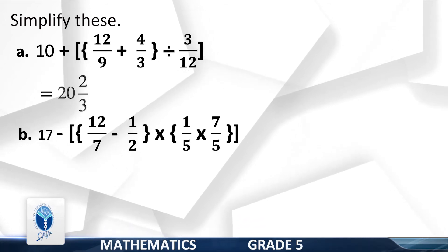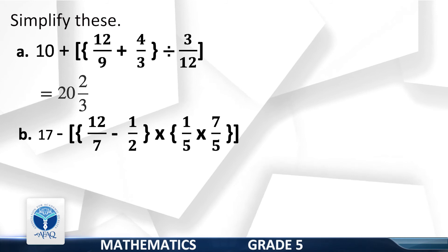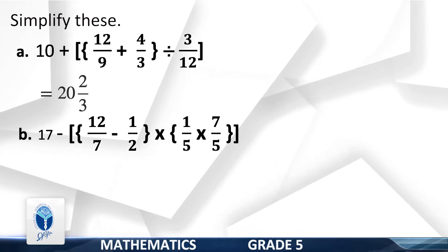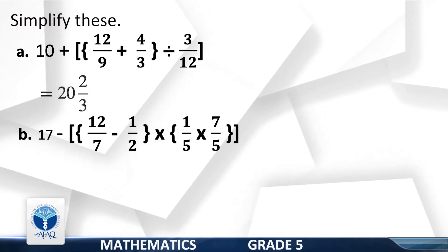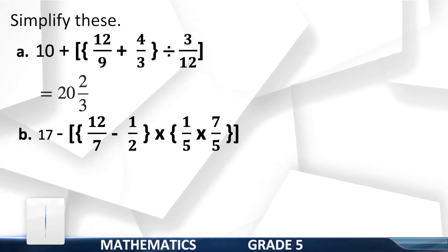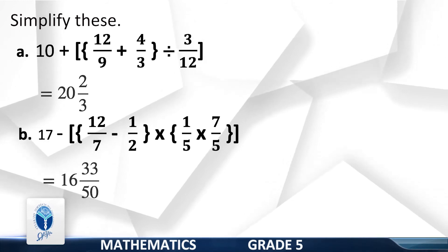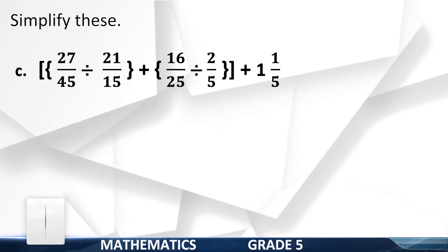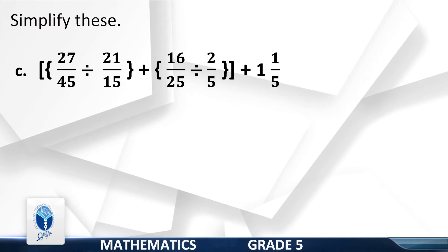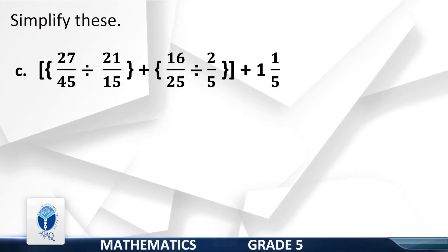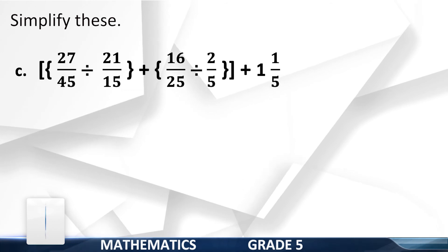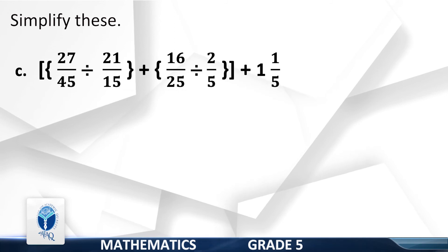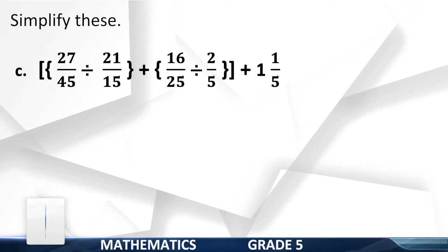B: 17 minus {1/2 multiplied by (1/5 multiplied by 7/5)}. Yes, your answer is 16 whole 13/35. C: 13 minus 1/3 plus {16/25 divided by 2/5} plus 1 whole 1/5. Yes, your answer is 3 whole 8/35.